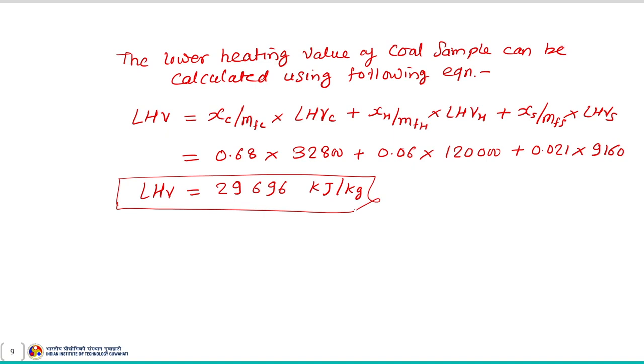I hope it is now clear how to estimate the lower heating value as well as the higher heating value of a given sample if its composition is known. Once the composition and component heating values are given, you can use these expressions for LHV and HHV. With this we will end our lecture here, and in the next lecture we will practice a few more examples on concepts from module 2. Thank you.